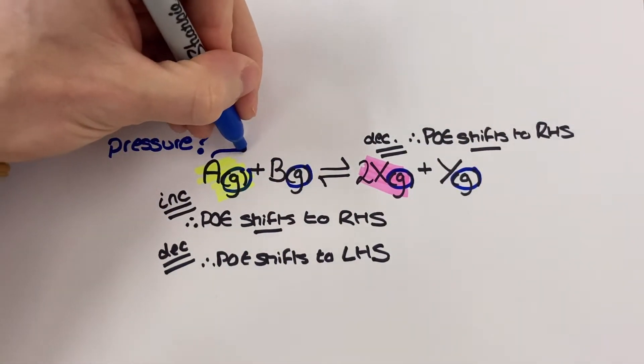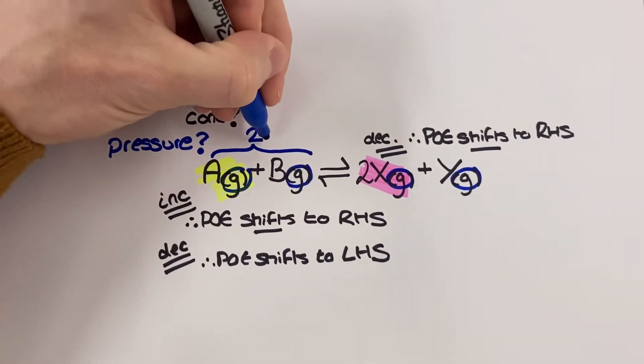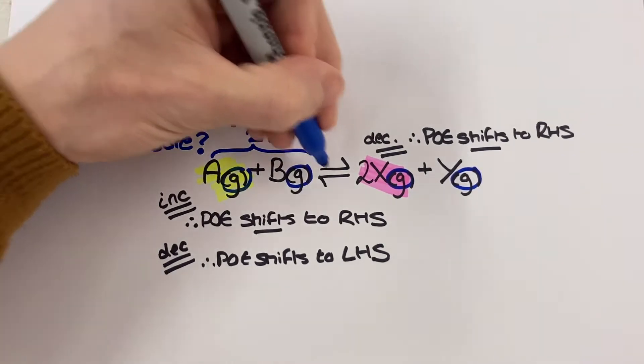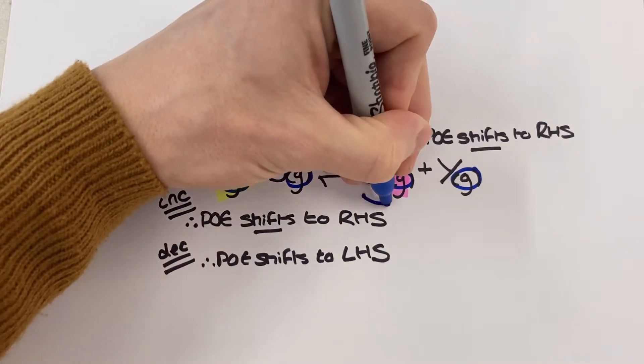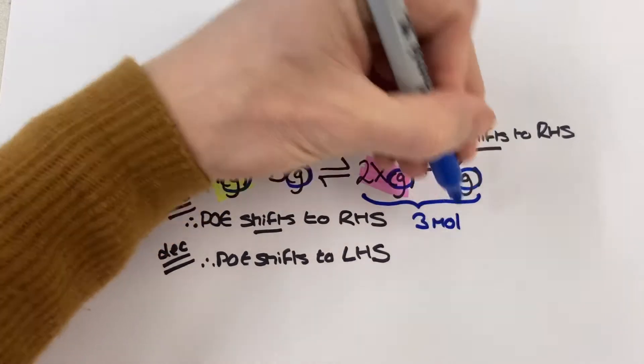The second point about making sure that we've got a different number of moles on either side of the reaction equation can be very easily checked by just adding up the numbers which are used to balance the reaction equation from each side as you can see on screen now.